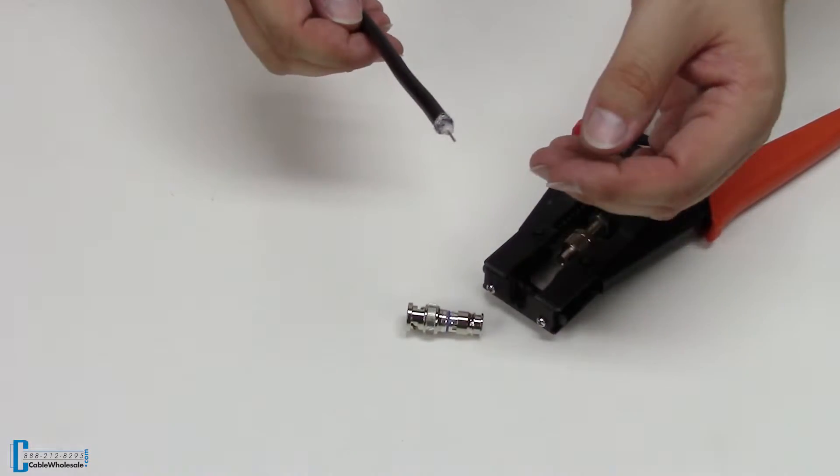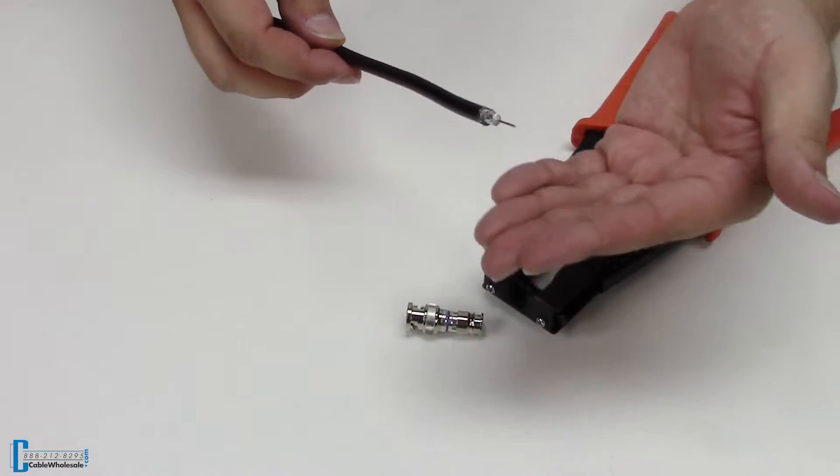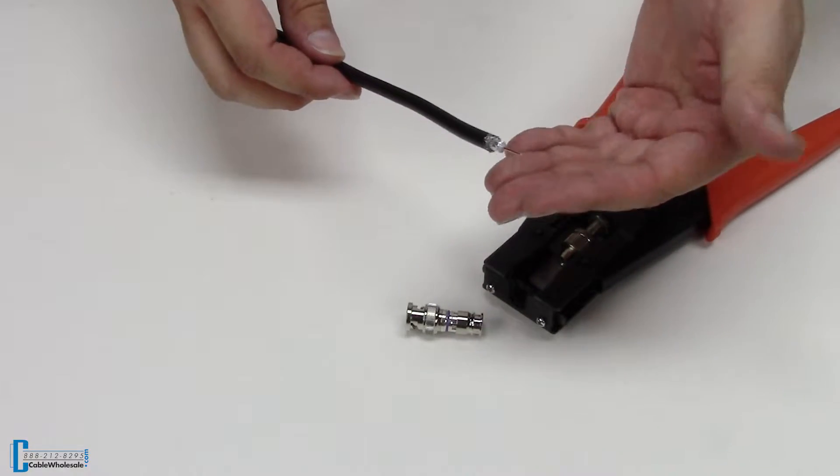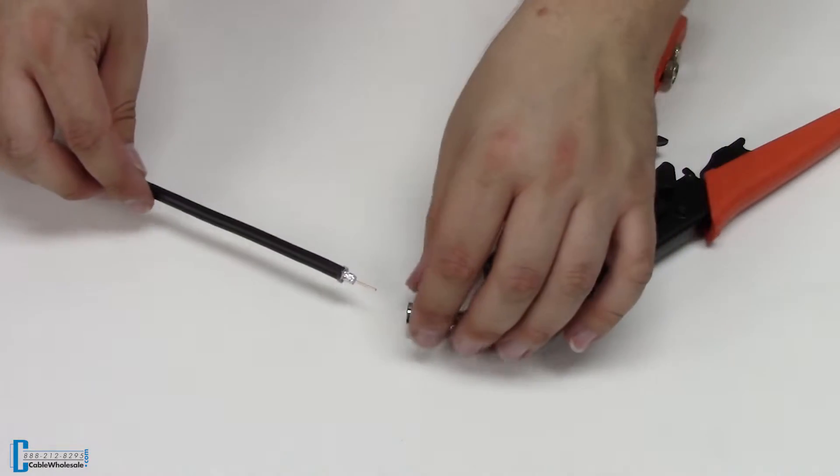Start by stripping the coaxial cable. If you're not sure how to do that or haven't done it before, we have a link right here in the top corner.